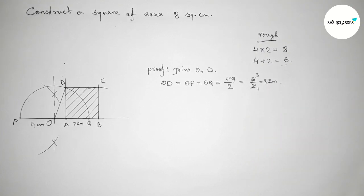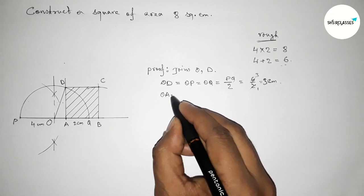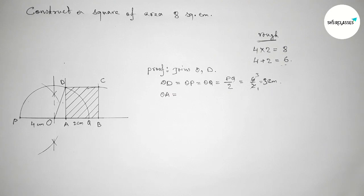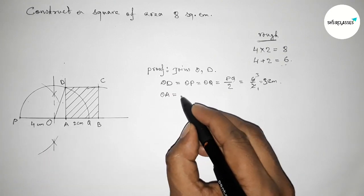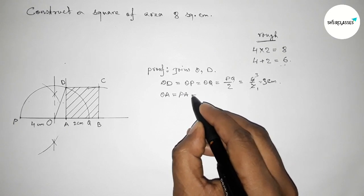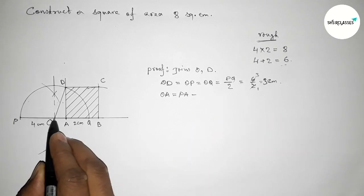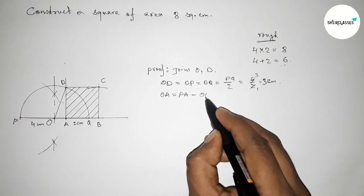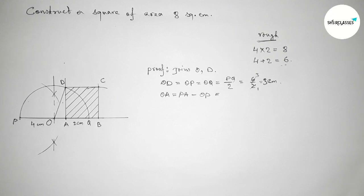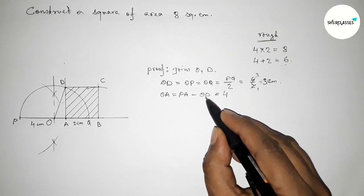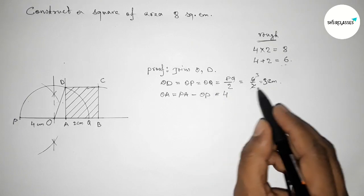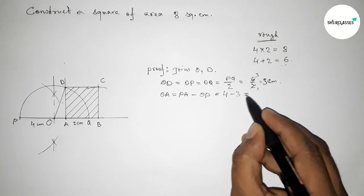Next, finding the length OA. OA equals to PA minus OP. Now putting the values: PA is 4 and OP is 3. So subtracting, OA equals 1 centimeter.